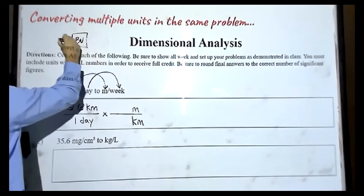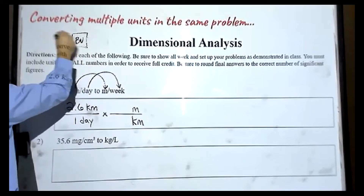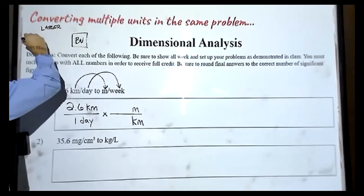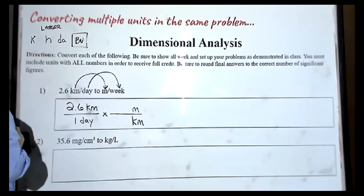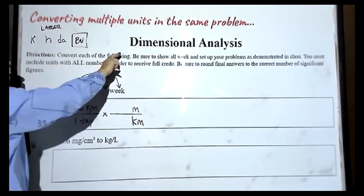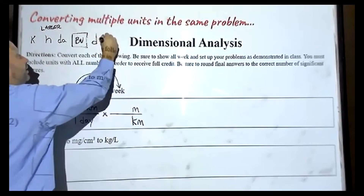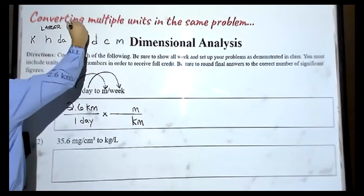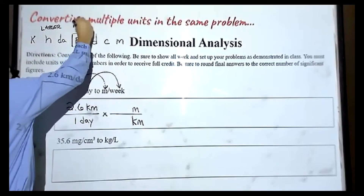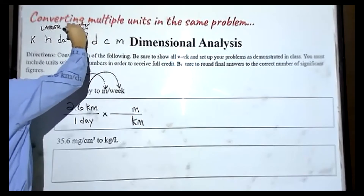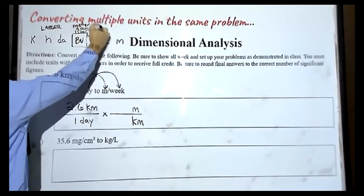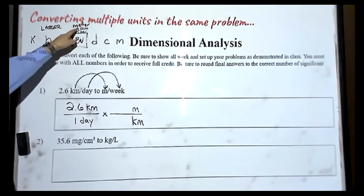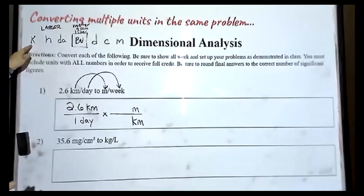Here's our base unit. On the left side, where we have the larger ones: kilo, hecto, and deca. On the right side, we have the smaller ones: deci, centi, and milli. In our base unit, we have meter, gram, liter — depending on whether we're talking about a length, a mass, or a volume. In this case, we're talking about a length, and we have meter here and kilometer over here. So kilometer is the larger one. The larger ones are further to the left, and this side is smaller ones.